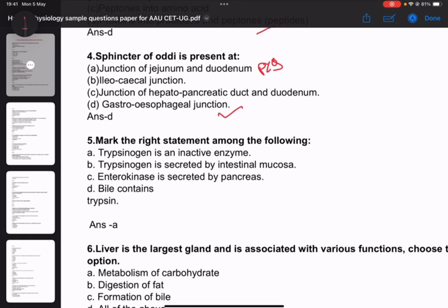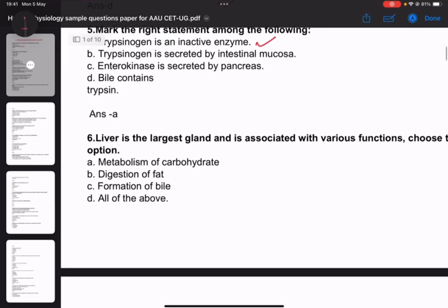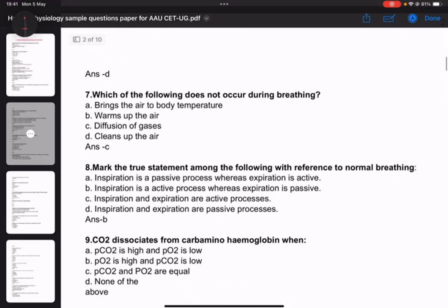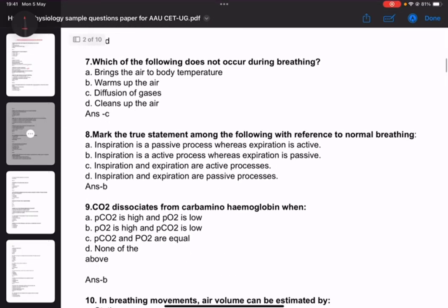Question six: Liver is the largest gland and is associated with various functions - the answer is D, all of the above. Question seven: Which of the following does not occur during breathing - answer is expiration is a passive process.